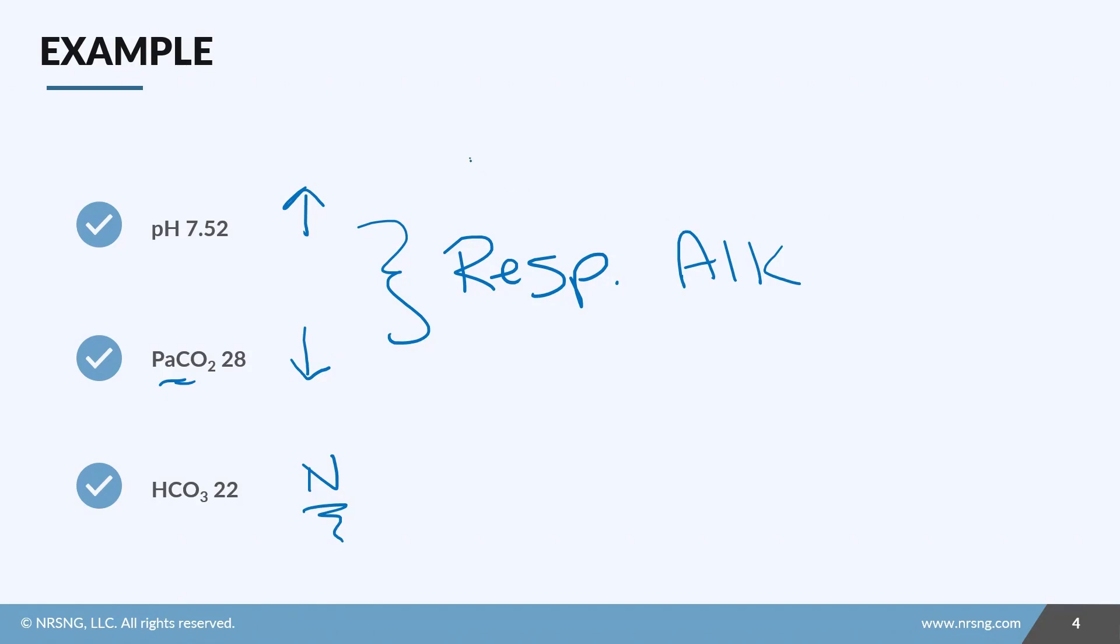So we would call it uncompensated respiratory alkalosis. Got it? Next. Step one: pH of 7.29, that's low. CO2 of 37, that's normal. Bicarb of 16, that is low. All right, we see equal arrows. It's bicarb, which is metabolic.